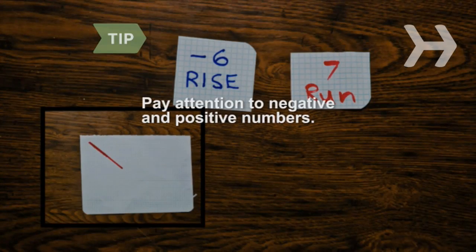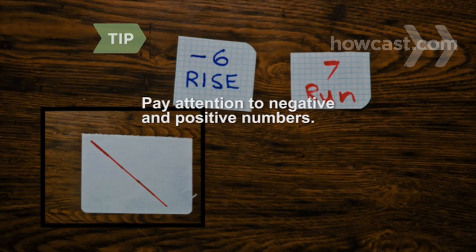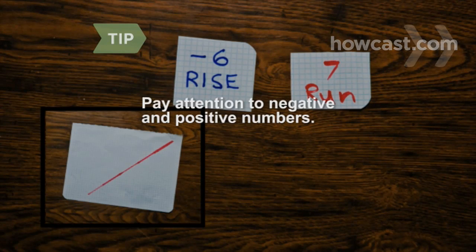Pay attention to negative and positive numbers. A negative slope means the line travels downward, while a positive slope means it rises.